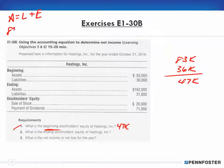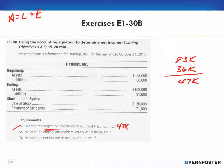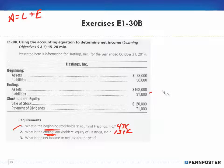Think about it: assets of 83,000 equals liabilities of 36,000 plus equity. When we isolate equity, we move the 36,000 across the equal sign, so 83,000 minus 36,000 gives us 47,000 as beginning equity. We do the same thing for ending equity. Ending assets are 162,000 and liabilities are 31,000. Subtracting gives us 131,000 for ending stockholders' equity. Those two are relatively simple.